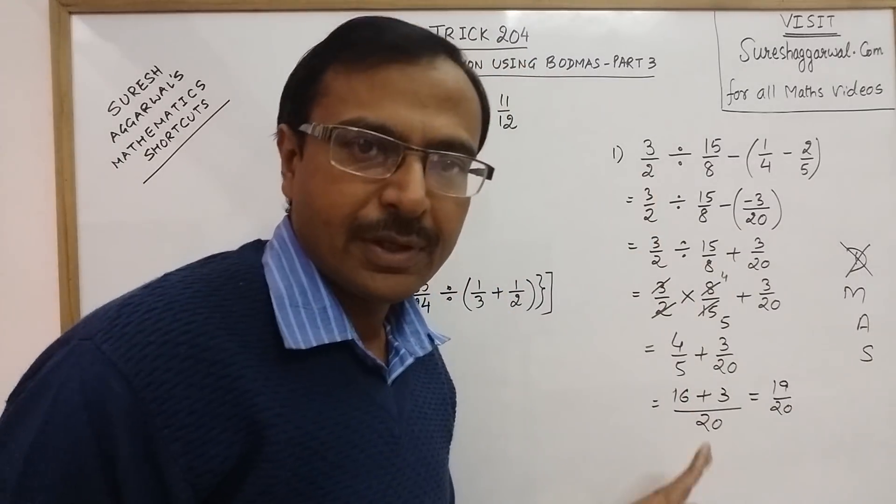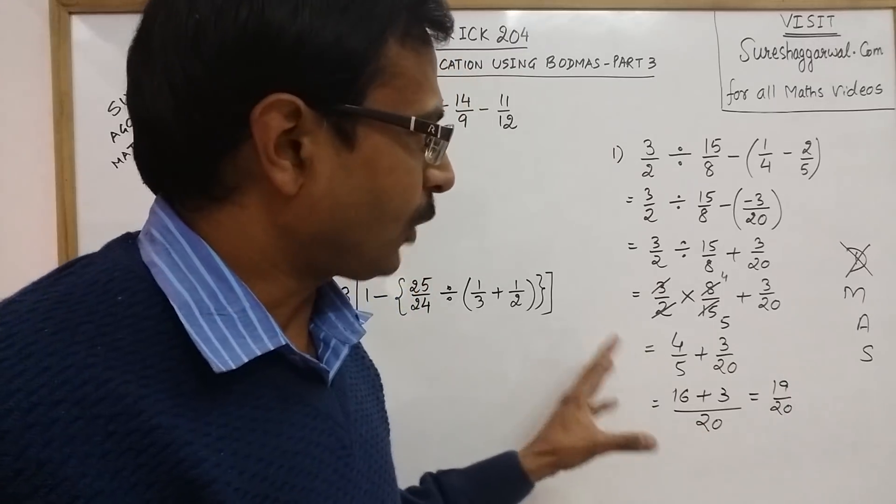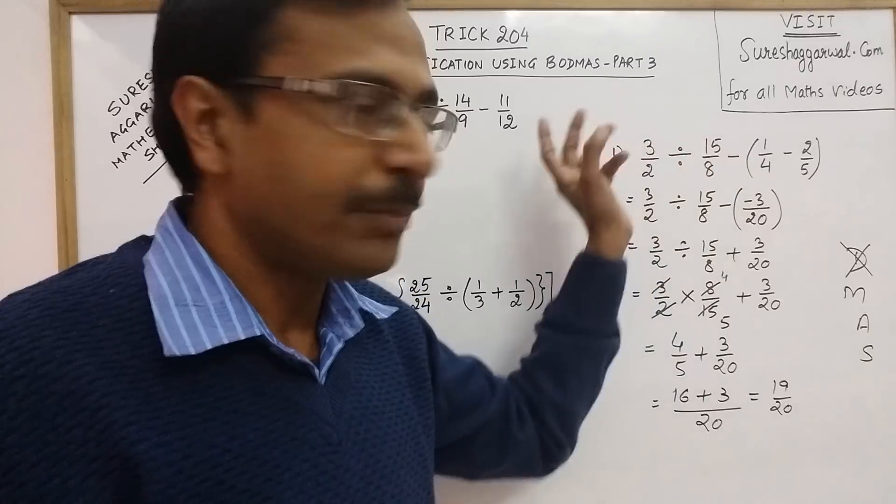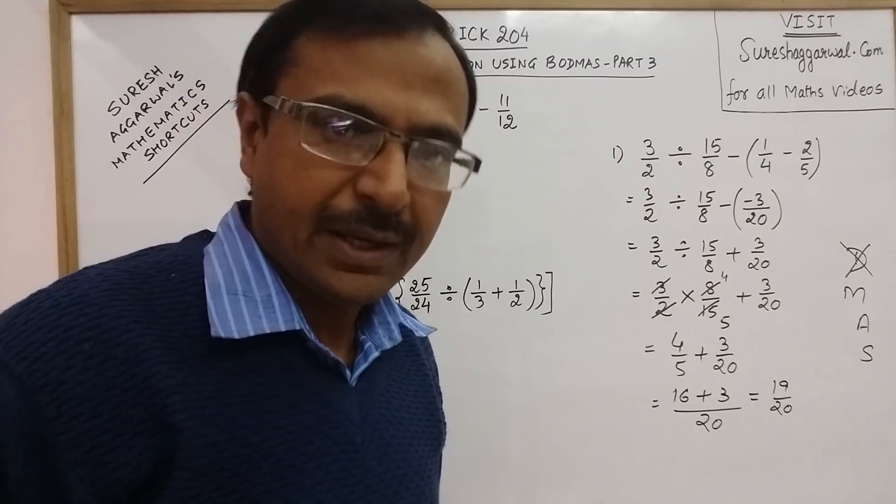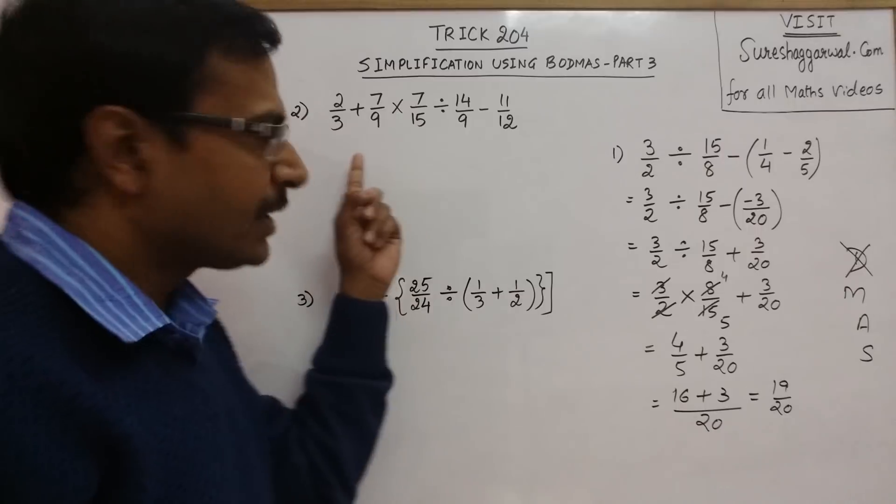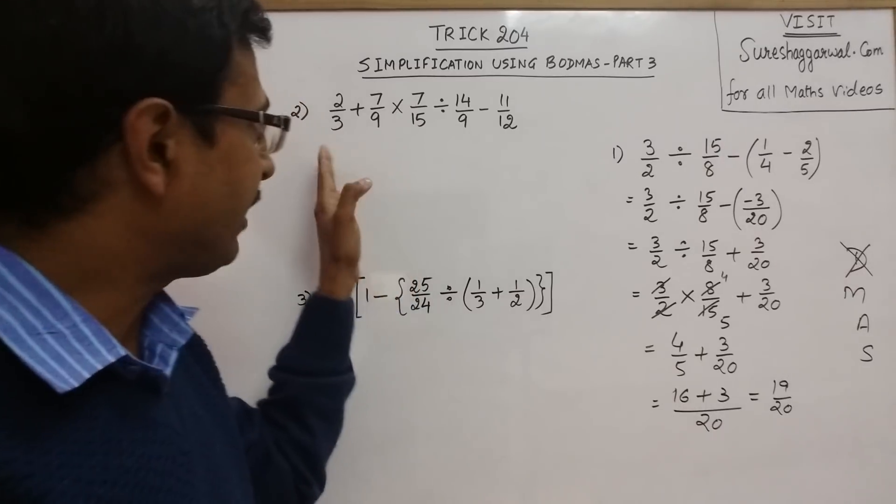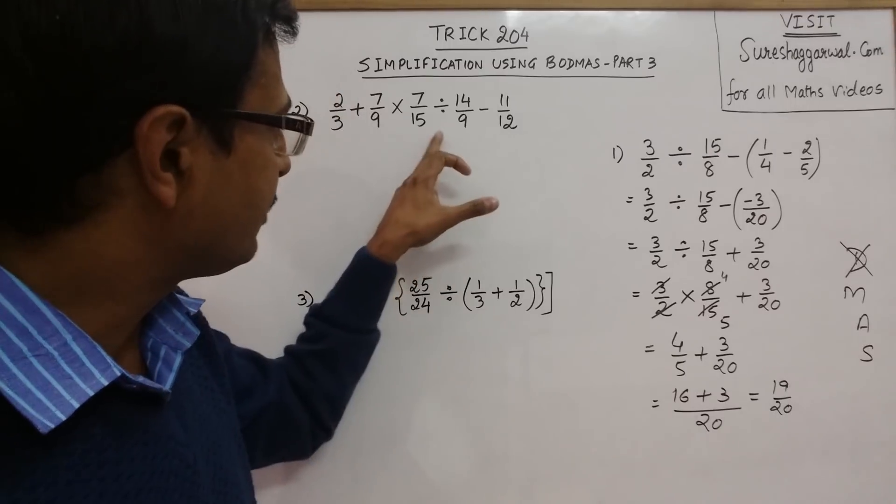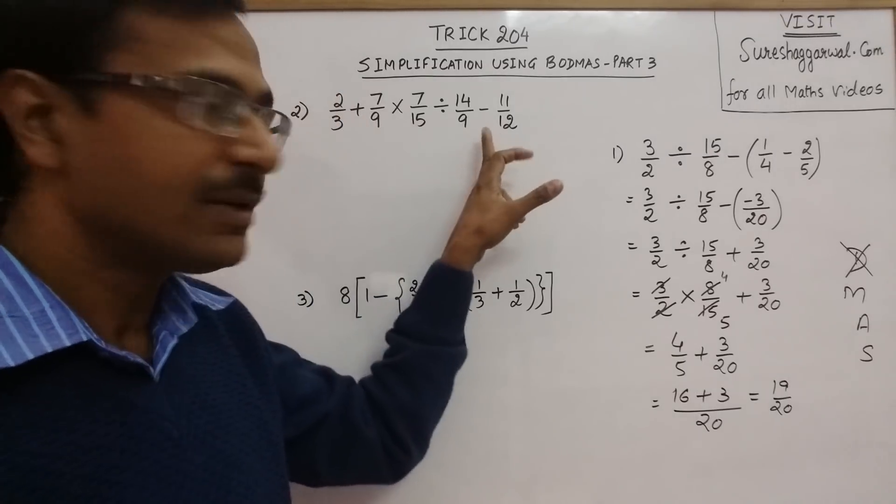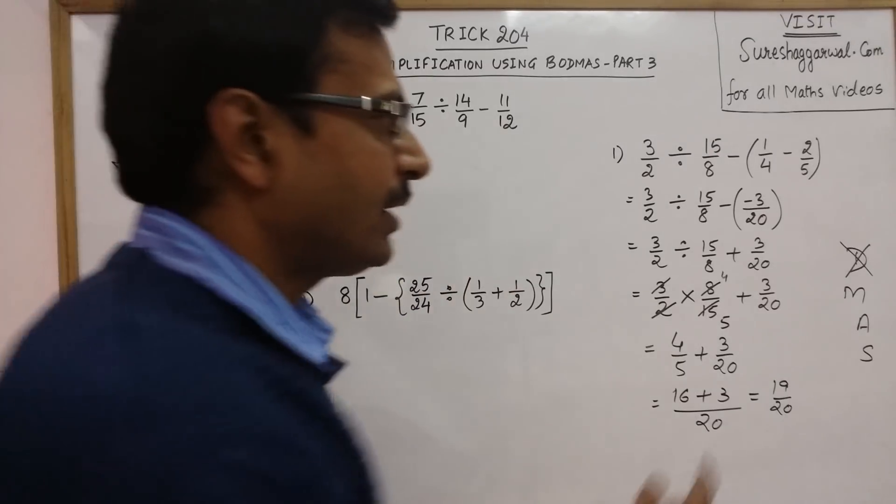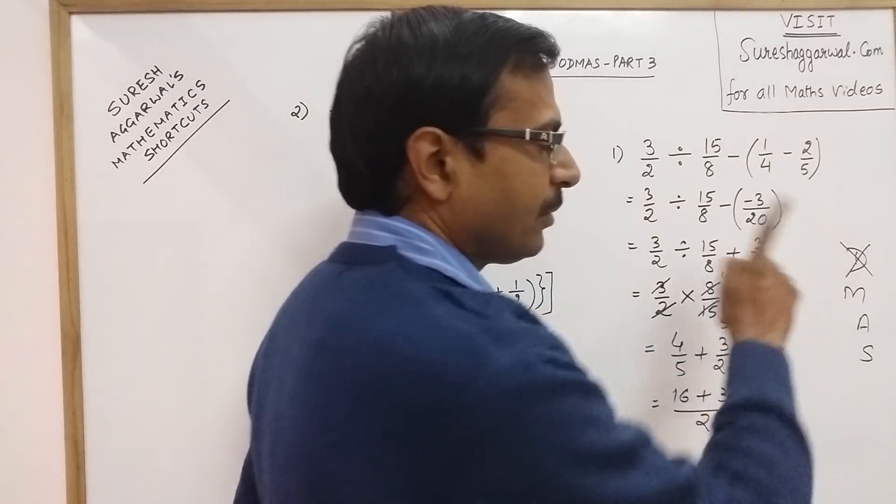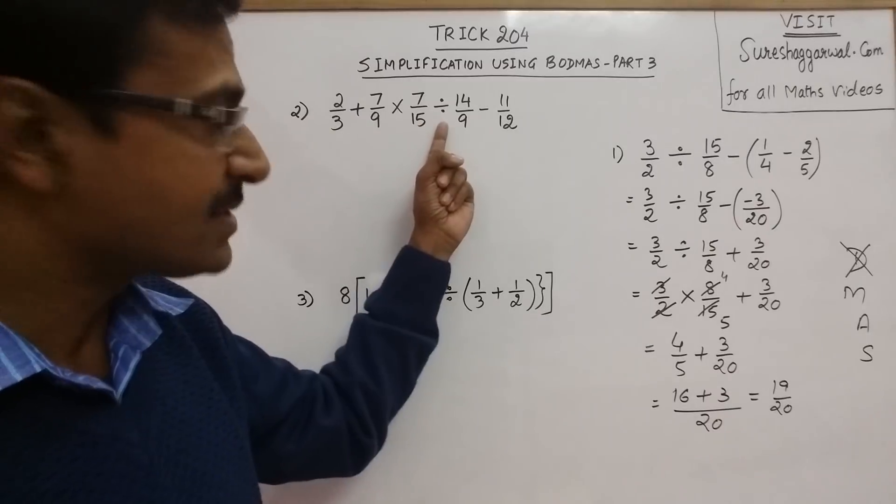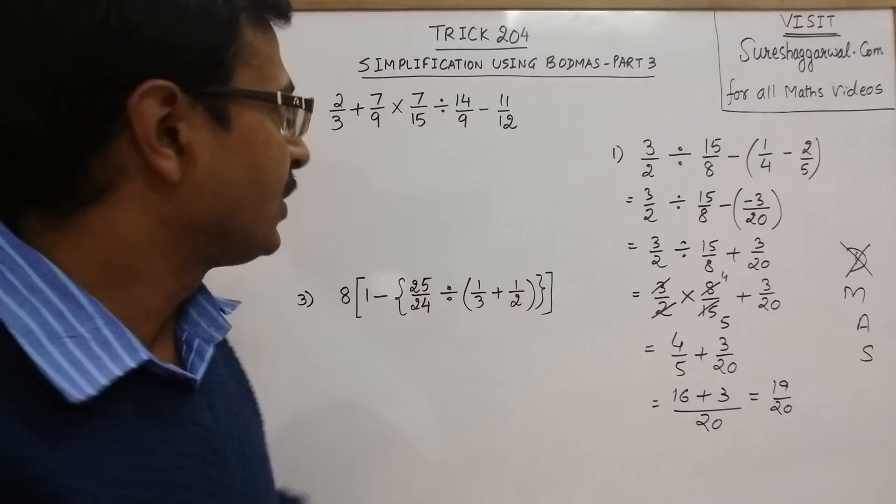This is the way you solve problems involving fractions using this important concept of BODMAS. Now see another problem. Here I have taken 5 fractions and all 4 operations of division, multiplication, addition and subtraction. In our sequence priority-wise, division comes first, so we need to deal with this division sign first.